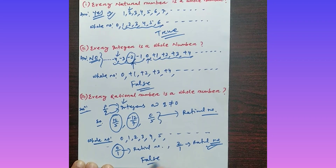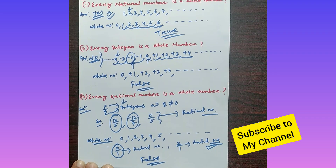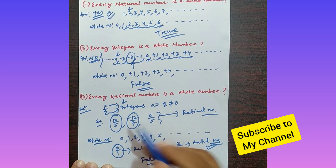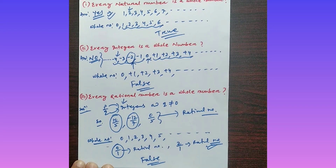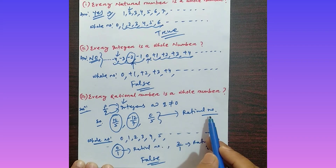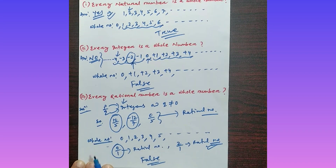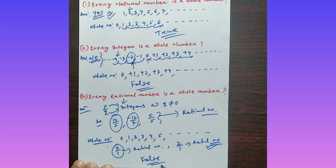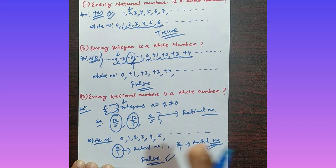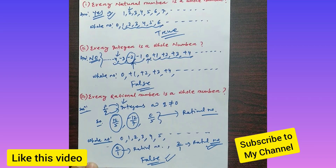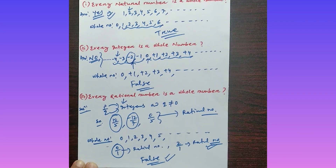Therefore the answer is FALSE — every rational number is not a whole number. Examples like -12/7 and 10/5 are rational numbers but are not whole numbers. Dear students, if you liked this video, please like and subscribe to my YouTube channel. Thank you very much.